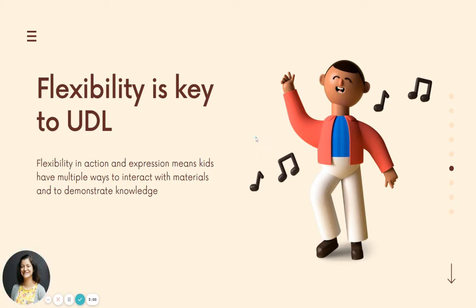The third principle is that flexibility is key to universal design. In action and expression, it means that kids have multiple ways to interact with material and to demonstrate their knowledge. It may not be a traditional test — maybe they create a 3D model, role play, or a video to show that they understand.